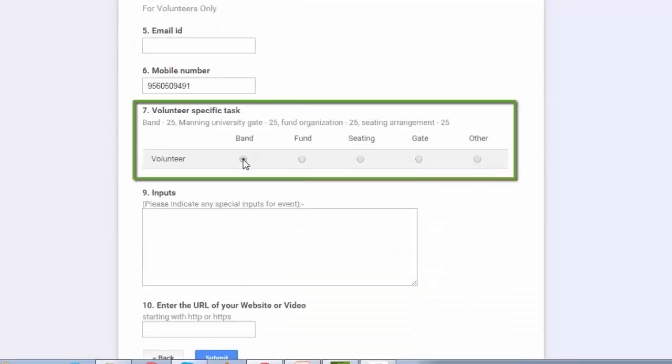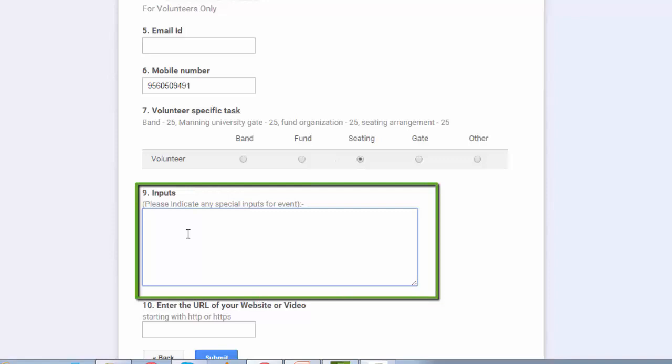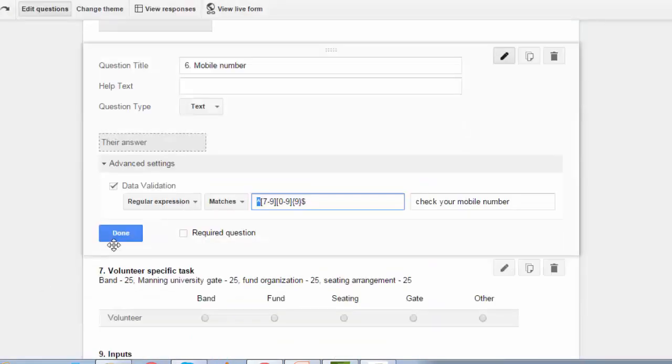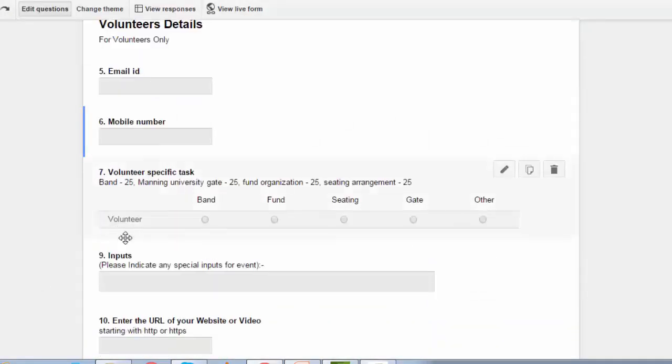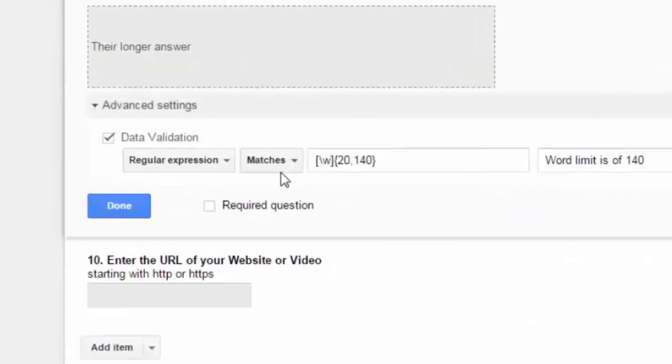Let's go to the next question. This is a simple choice question. The volunteer wants to choose band, fund or seating and next question is an input event. So anyone can enter the inputs within a character set given in the syntax. Let me go to the form and check this out. Input. Advanced setting. Expression. Regular expression matching. This is syntax.